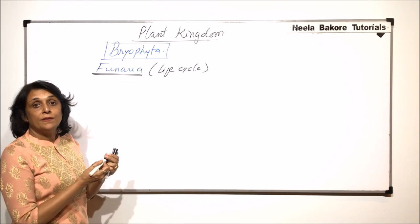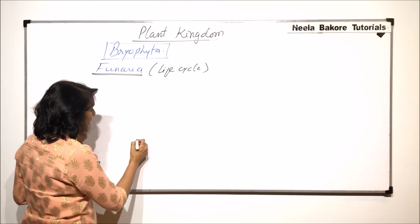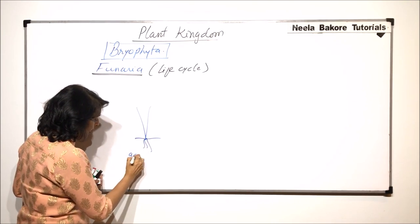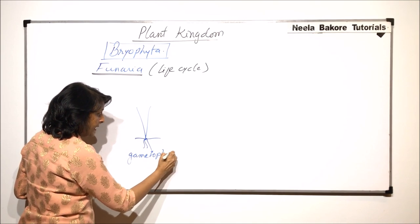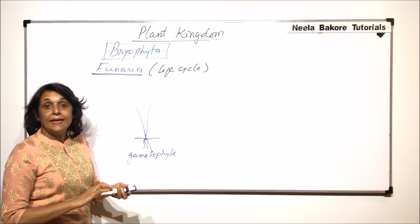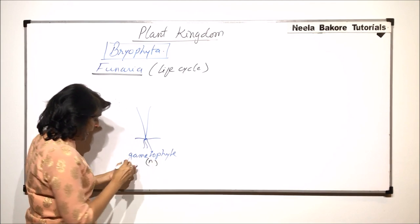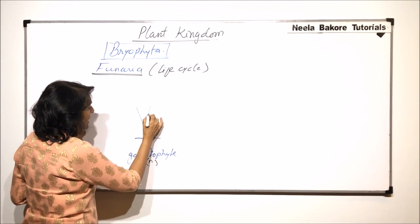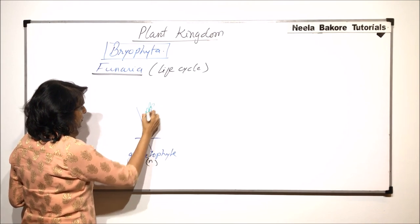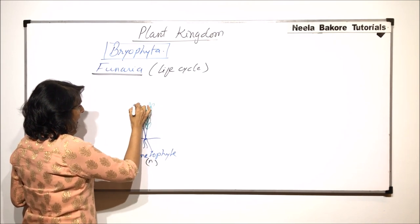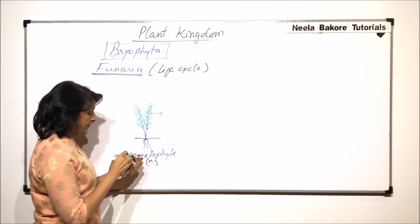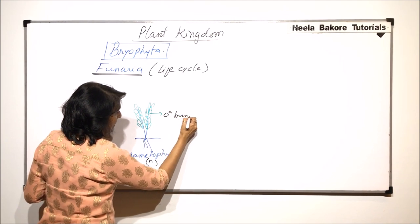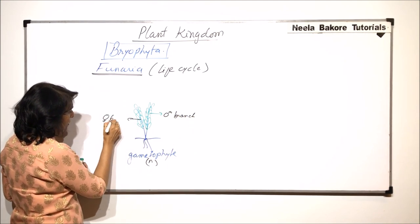When we start with the structure, we say that the predominant stage is the gametophyte. So this is the gametophyte and this gametophyte is haploid and it has two branches. Each branch was covered with that spirally arranged leaf-like structure. And say this is the male branch and this one is the female branch.